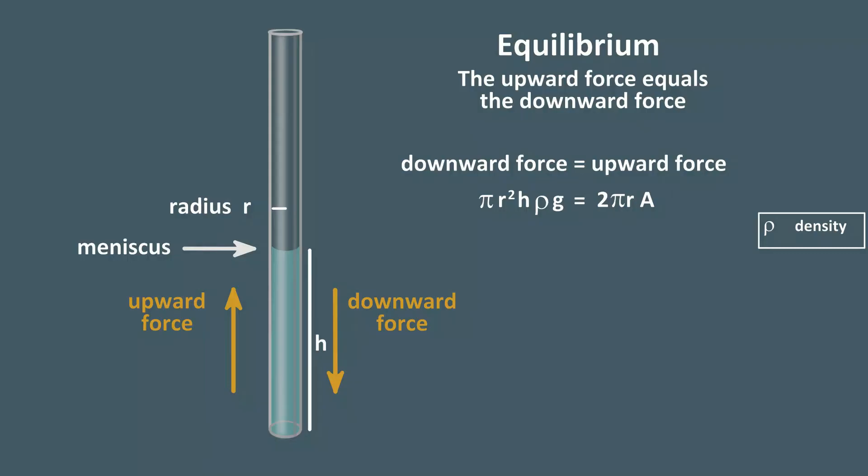So, as the tube gets bigger, the weight of the water in the column exceeds the upward force. If we solve for the height, we get h equals 2A over rho g r.